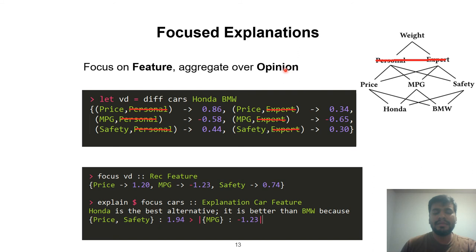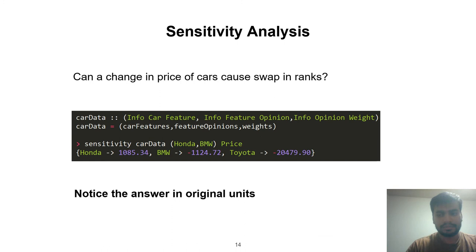If we wanted, we could have focused over feature and aggregated over opinions. If we did that, these are the set of numbers that we would end up with. This tells me that price and safety are the features or attributes where Honda has an advantage, and MPG is an attribute where BMW has an advantage. So price and safety is an explanation for why Honda was selected.